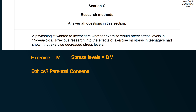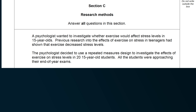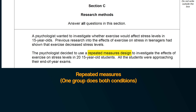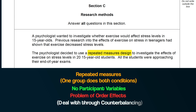'Previous research into the effects of exercise on stress in teenagers had shown that exercise decreased stress levels.' Here you need to spot that 'previous research' means there will be a directional hypothesis to write. 'The psychologist decided to use a repeated measures design to investigate the effects of exercise on stress levels in 20 fifteen-year-old students.' Here we see it's a repeated measures design — one group doing both conditions — so you can recall strengths and limitations: no participant variables, but there is the problem of order effects, which can be addressed through counterbalancing.